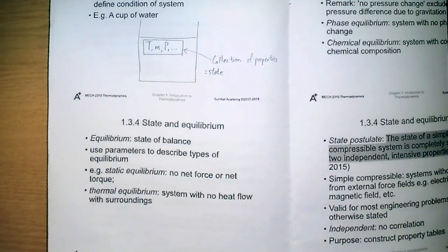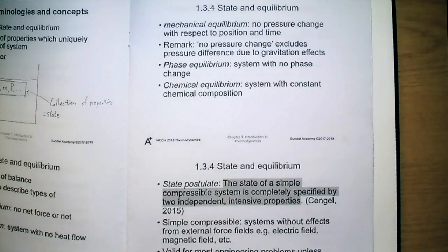And also, thermal equilibrium, that is a system without any heat flow. Also, there are other kinds of equilibrium that are commonly seen in thermodynamics, including mechanical equilibrium, phase equilibrium, as well as chemical equilibrium.